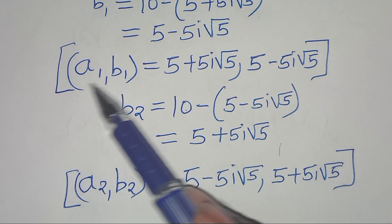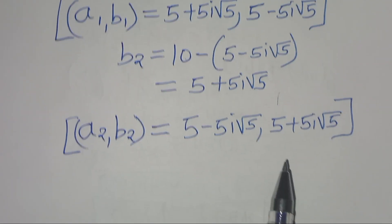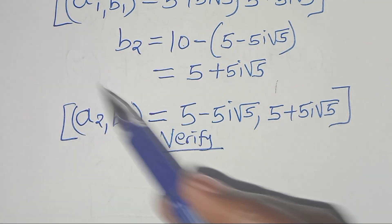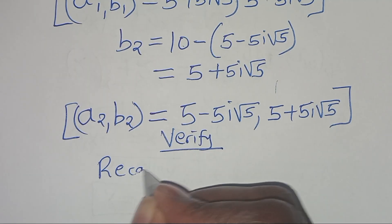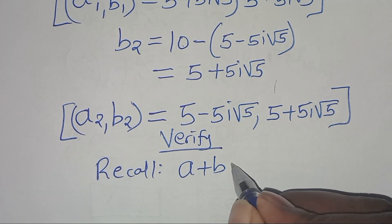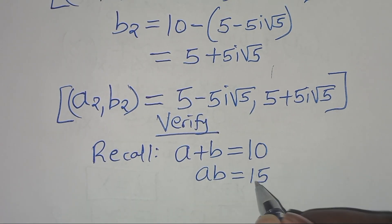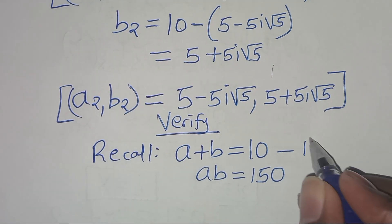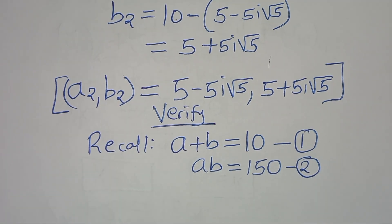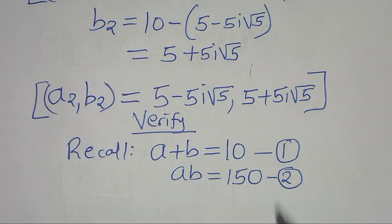We have two sets of solutions: A1, B1 and A2, B2. The next step is to verify that these two sets of solutions satisfy the original equations. Recall equation 1: a plus b equals 10, and equation 2: a times b equals 150. Let's verify the first set of solution A1, B1 by applying equation 1.